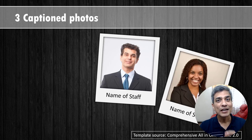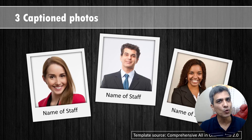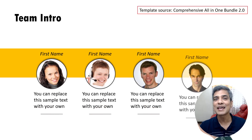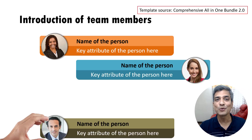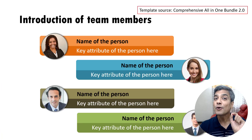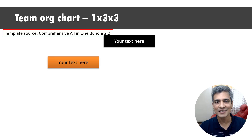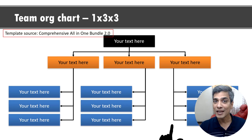Talking about introducing different members in your team, here are some creative templates from our comprehensive all-in-one PowerPoint bundle version 2.0. If you want to introduce four members, you can use this template that has subtle custom animation. If you want to talk about key attributes of each person, you can use this template. You can also show a team organization chart — on a click, each of the members in the first level is shown.